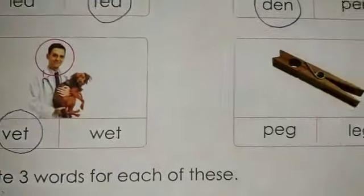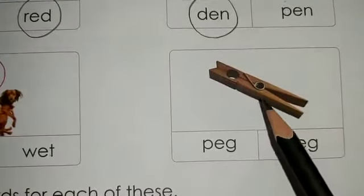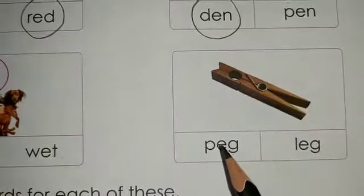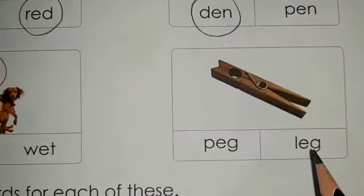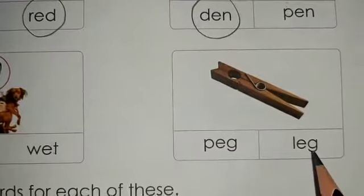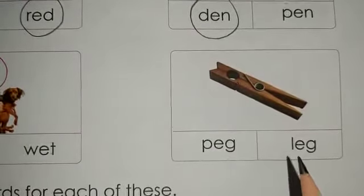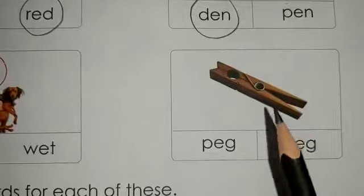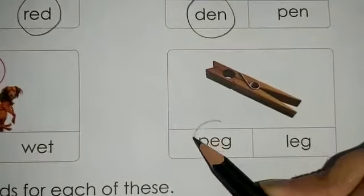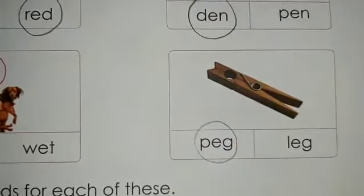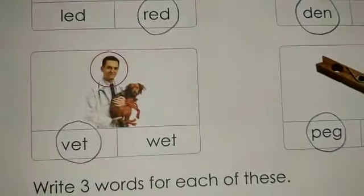Moving on to the next image — what do you see? Is this a peg, P-E-G, or is this a leg, L-E-G? You have studied these words in E-G sound words. This is a peg, so we are going to encircle the word peg. I hope this exercise is clear to you.